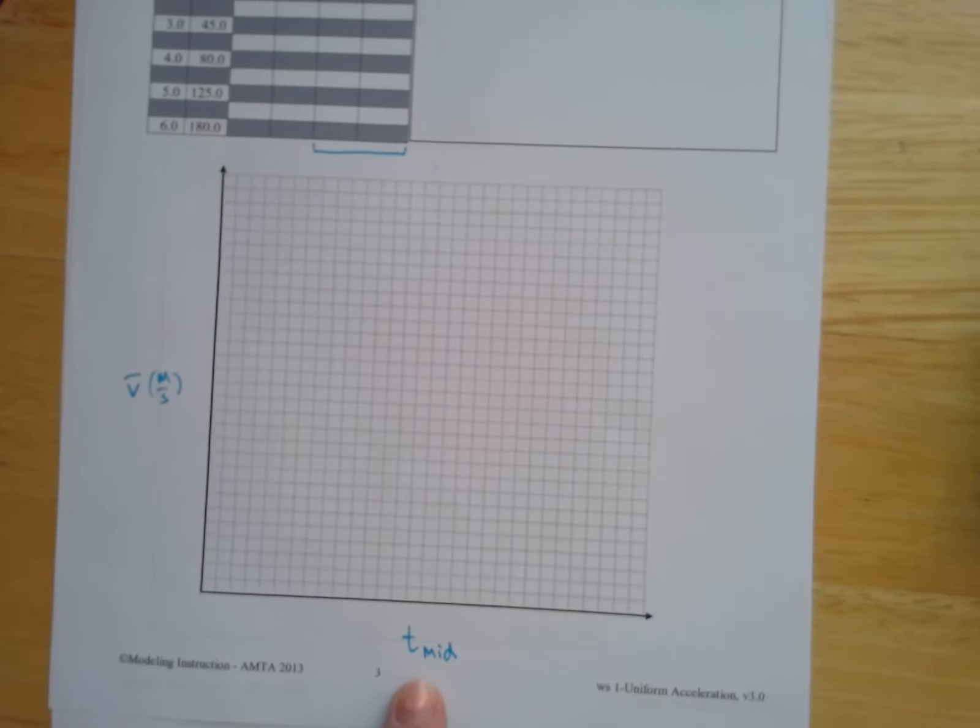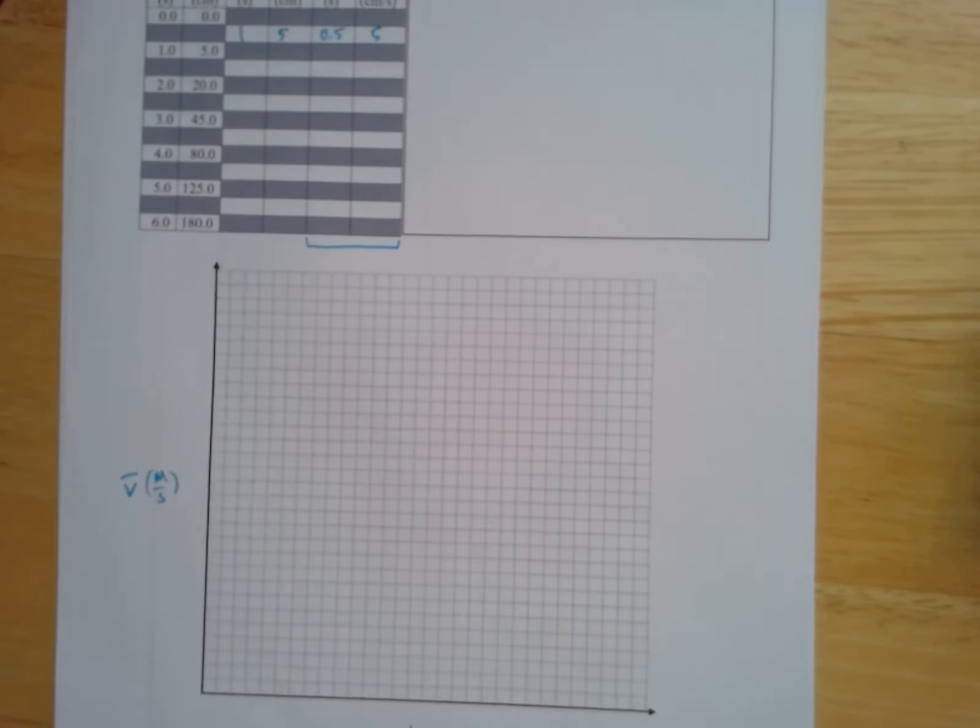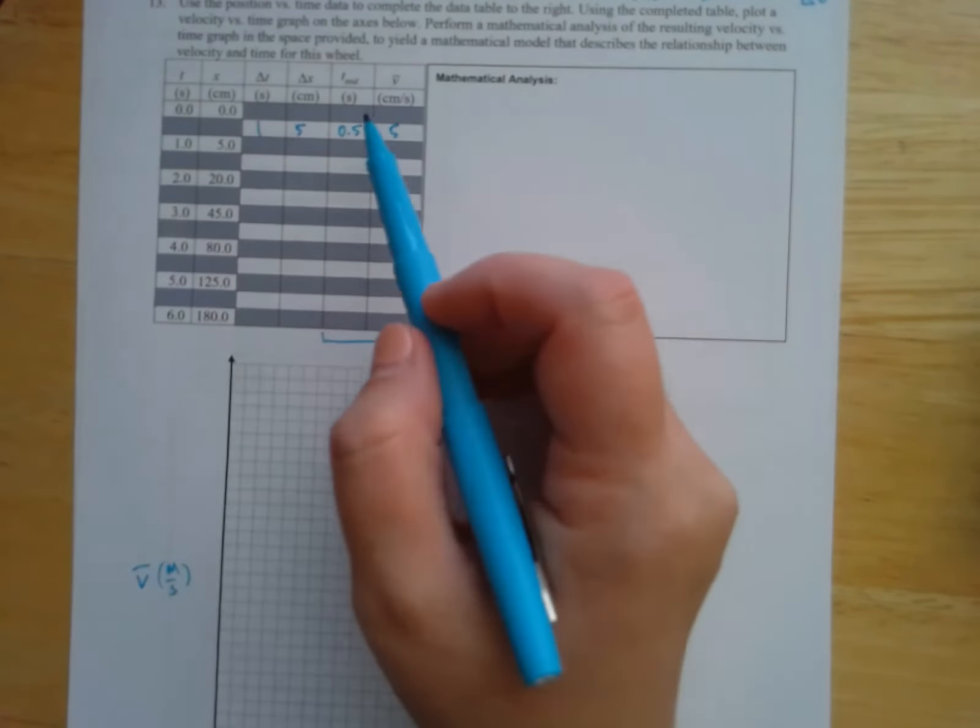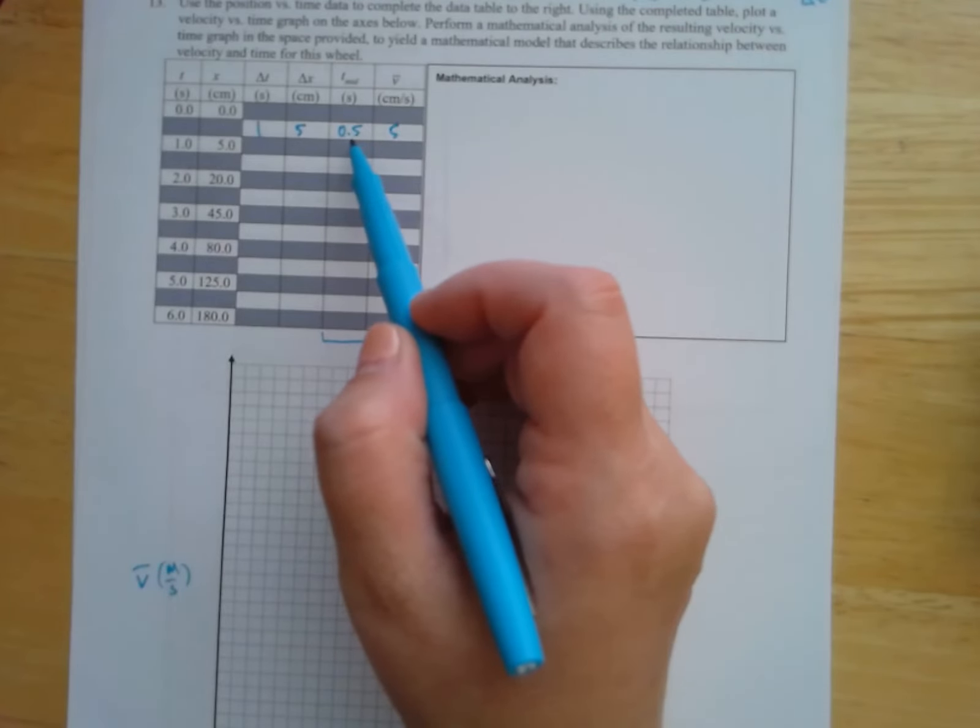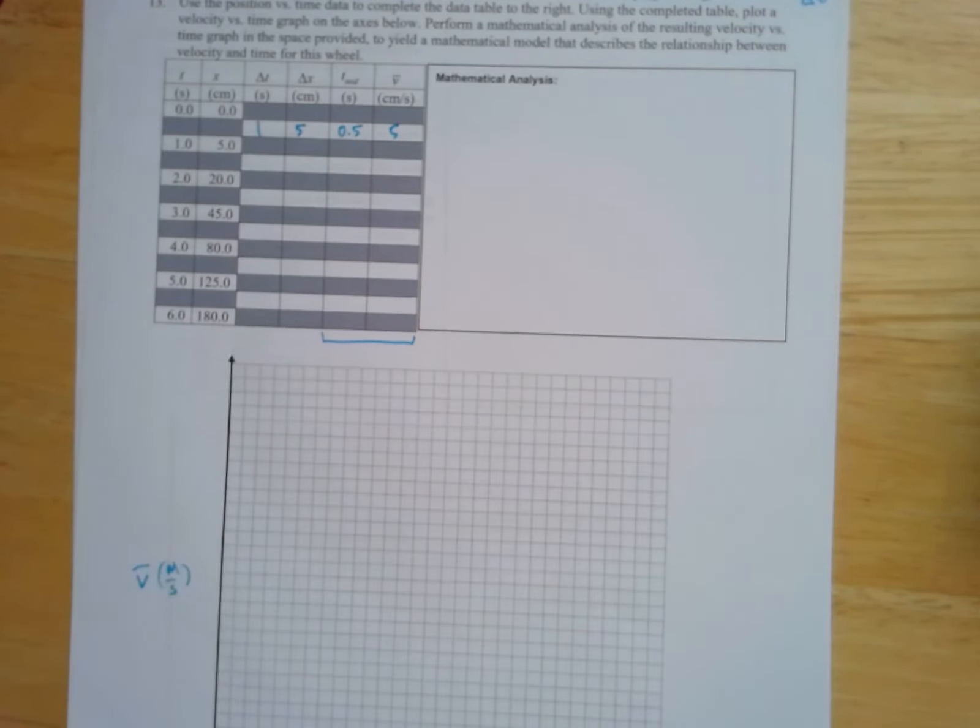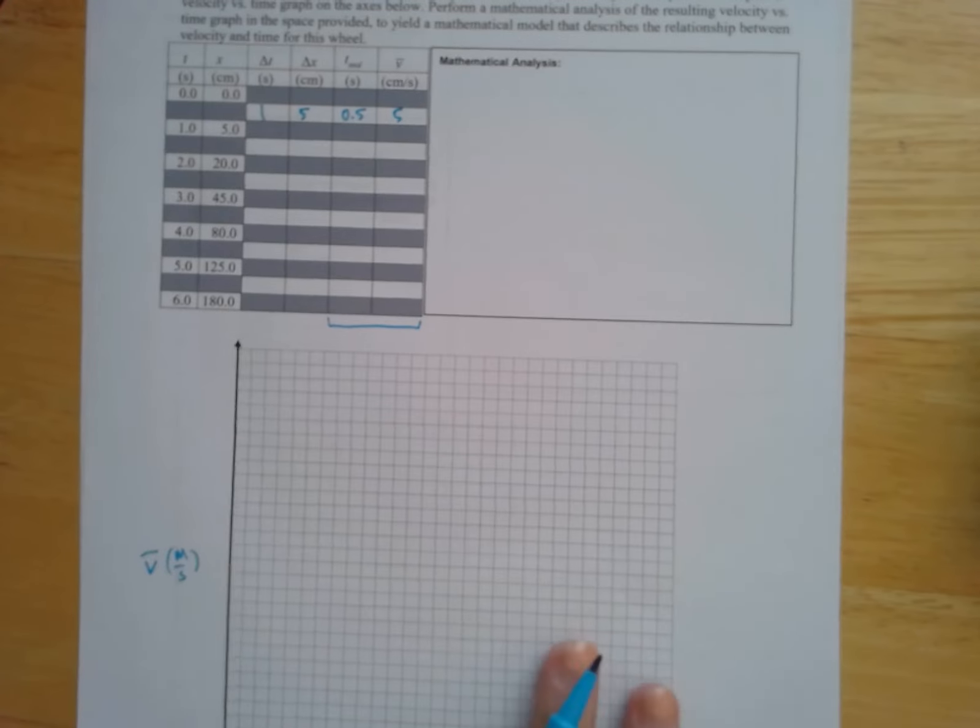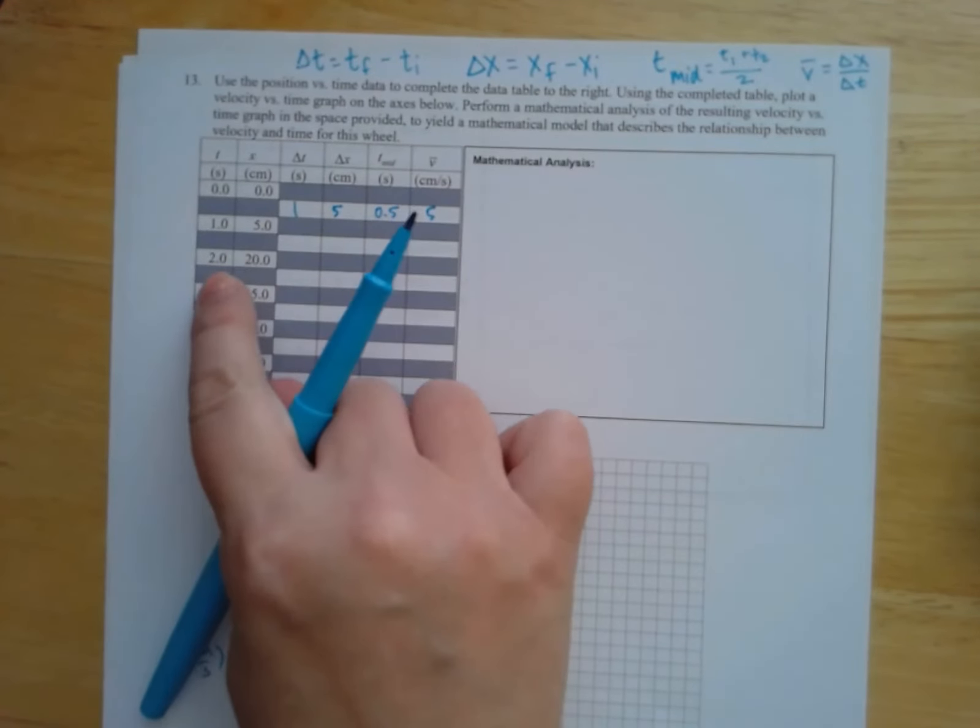Be careful with this one because one thing that I've noticed over time that students have a tendency to do is mark this 0, 1, 2, 3, 4, 5. And then sometimes instead of marking them 0, 1, 2, 3, 4, 5, which is what I recommend, they'll mark them 0.5, 1.5, 2.5, because each of these T mids are going to be 0.5s.